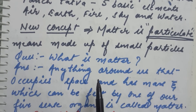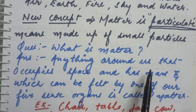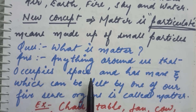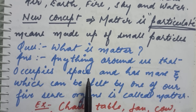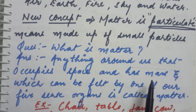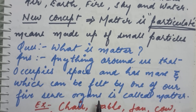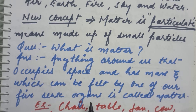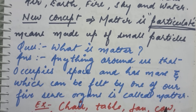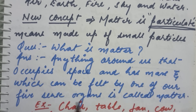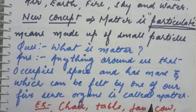So now we have to understand: anything around us that occupies space, has mass, and can be felt by one of our five sense organs — that substance is known as matter. Anything that occupies space and has mass and can be felt by one of our five sense organs is called matter.